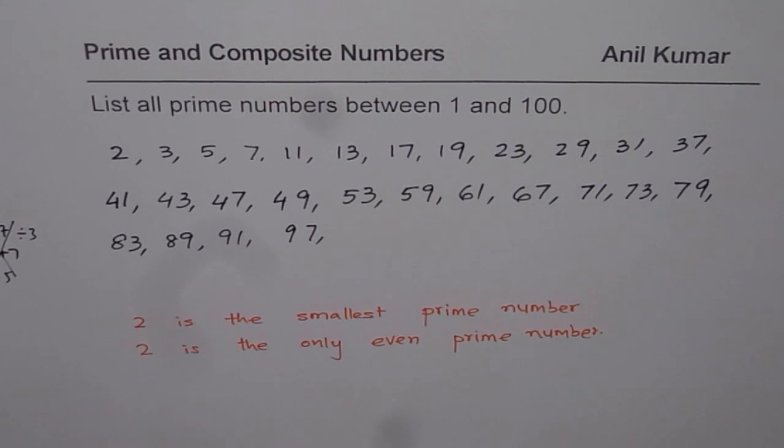So now you know what are prime numbers. Prime numbers are numbers which have only two factors - one and the number itself. So all these numbers which we have mentioned here are prime numbers. These are the prime numbers of your list. I hope that helps. Thank you and all the best.